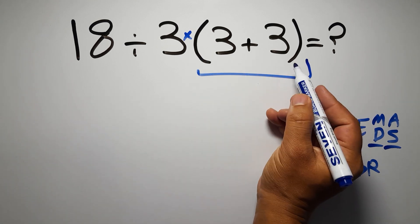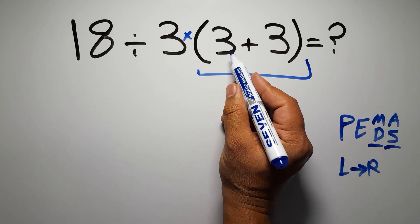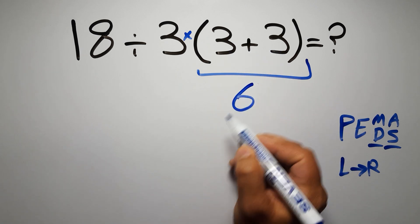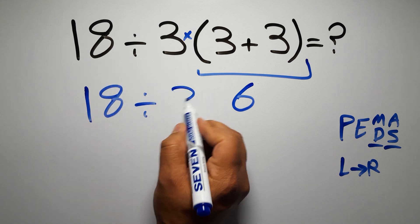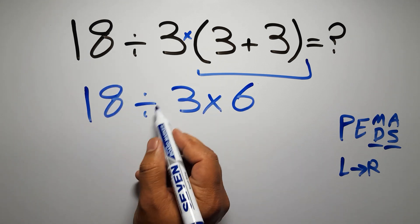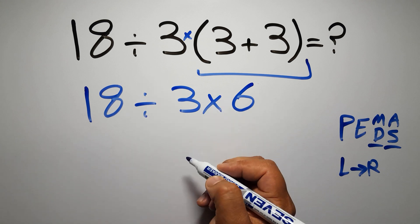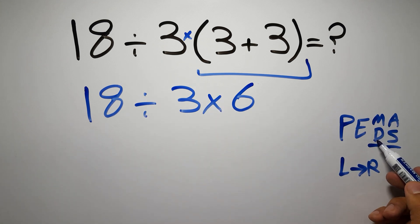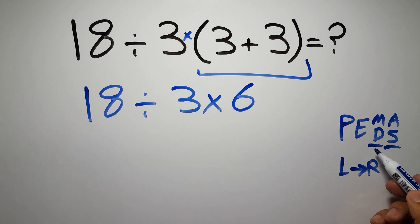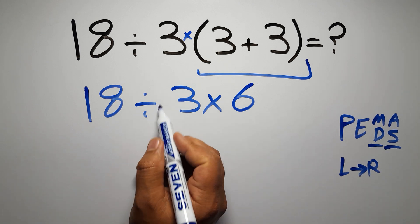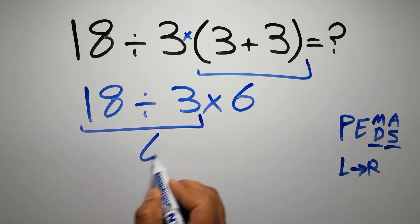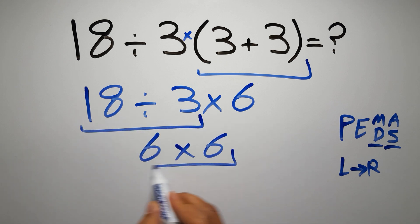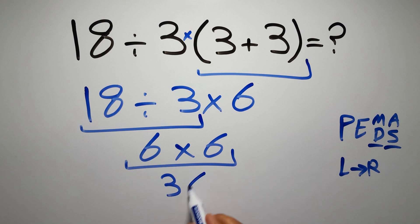So first we solve the parentheses: inside we have 3 plus 3 which equals 6, giving us 18 divided by 3 times 6. Now we have one division and one multiplication. Since multiplication and division have equal priority, we work from left to right: 18 divided by 3 is 6, and 6 times 6 gives us 36. That is our final answer.